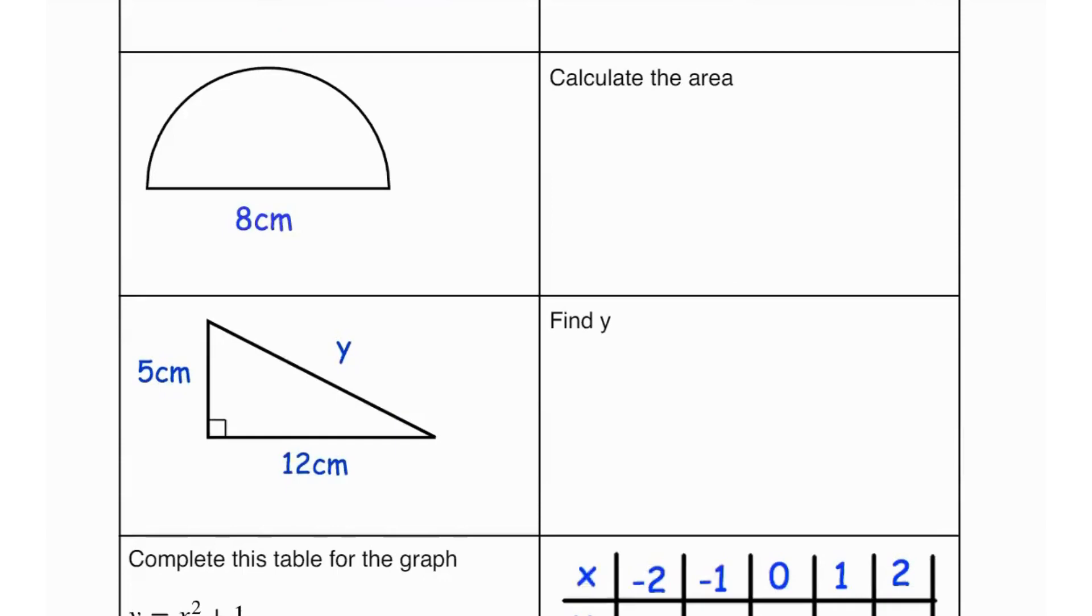Then let's calculate the area. Now we know that area of a circle has the formula of pi r squared. But over here we have a semicircle which means the area would be pi r squared divided by 2.